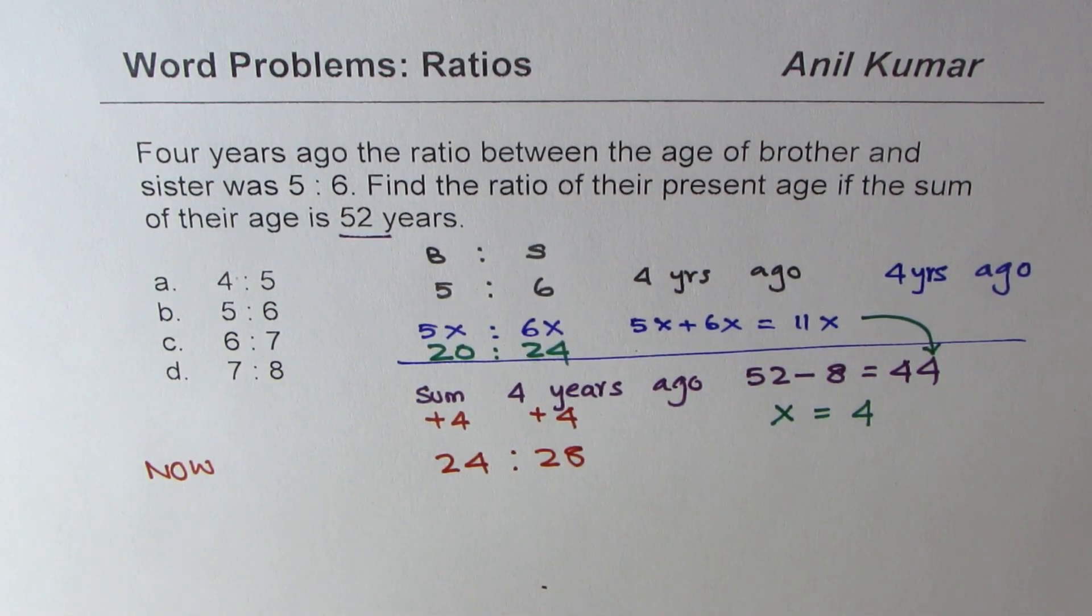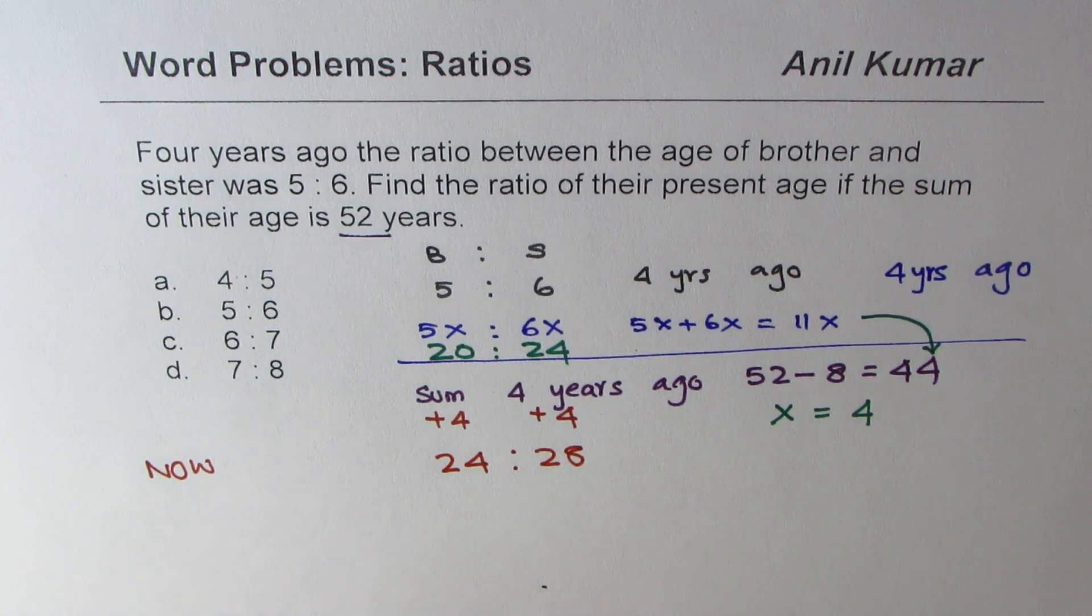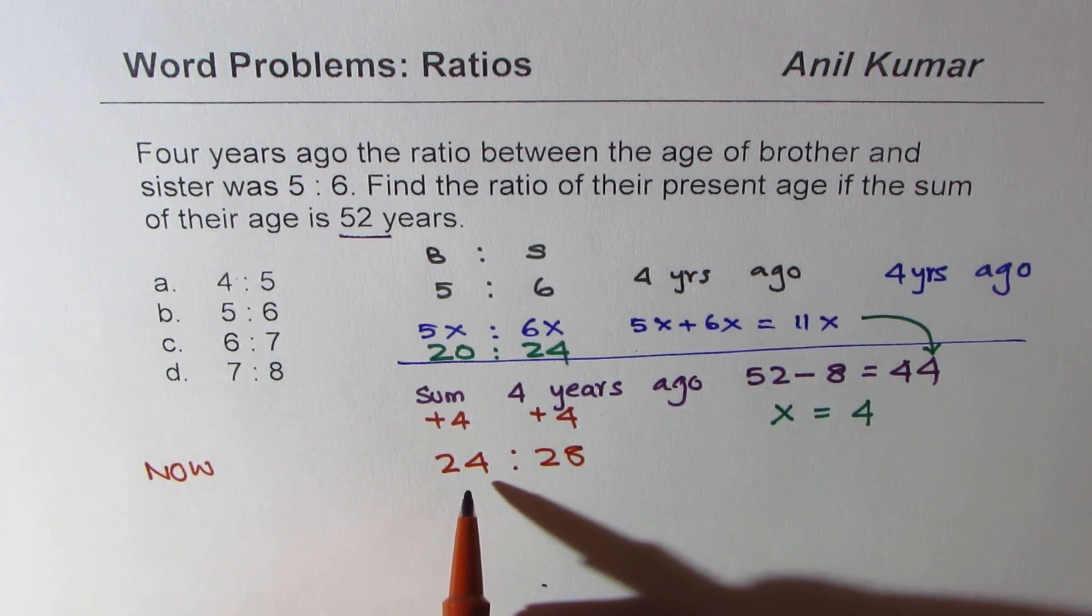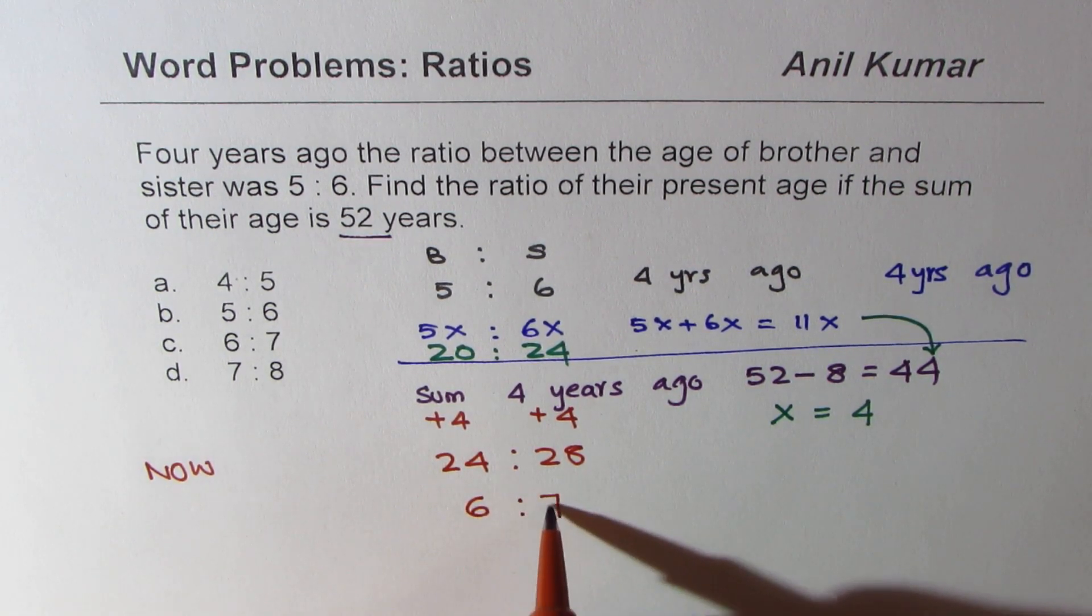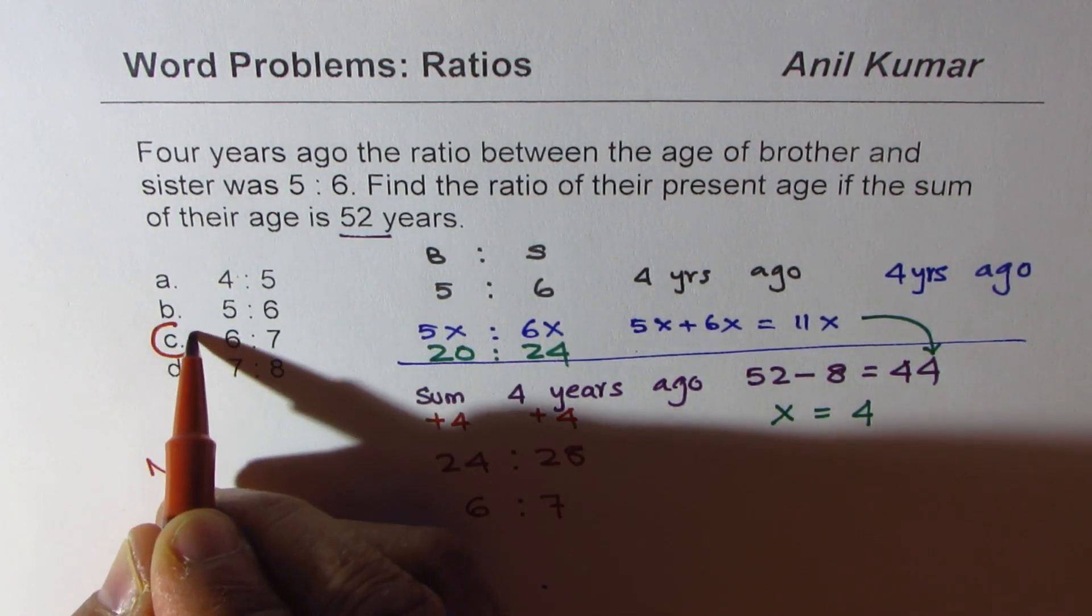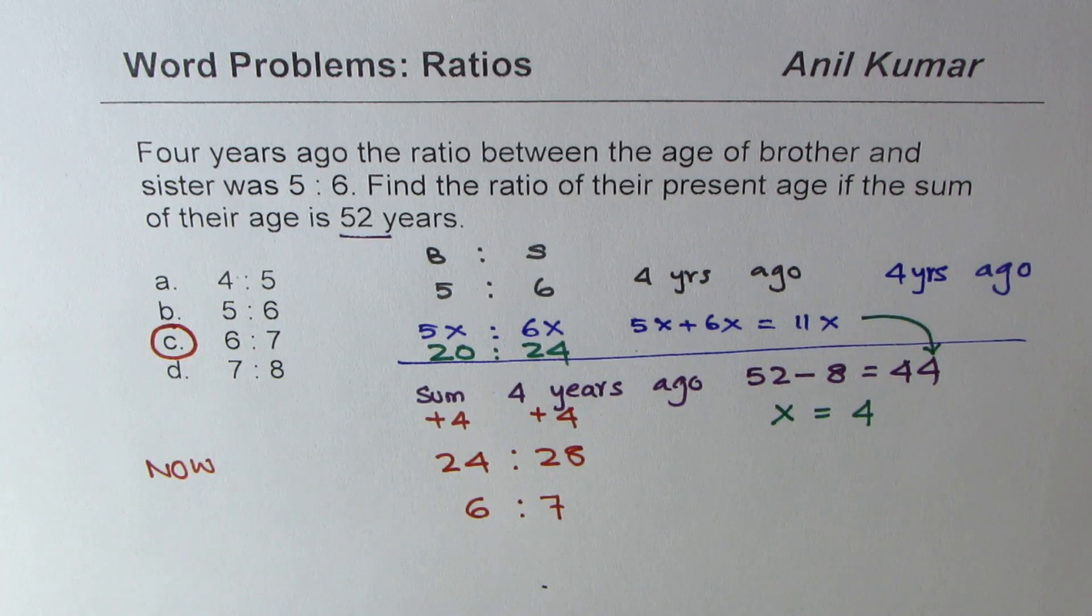So what is this ratio? This is what we need to find. Both can be divided by 4 and we get 6 is to 7 as our answer. Option C. Is that clear to you?